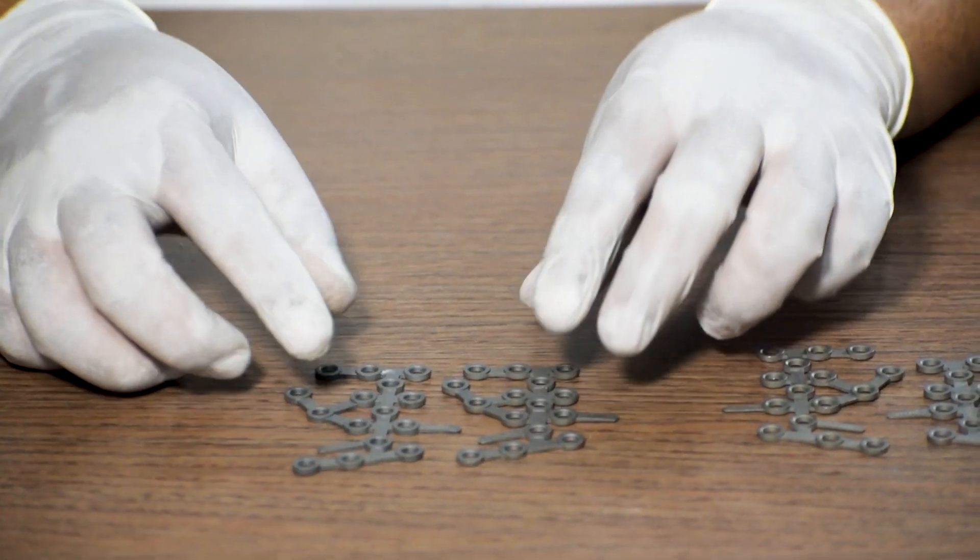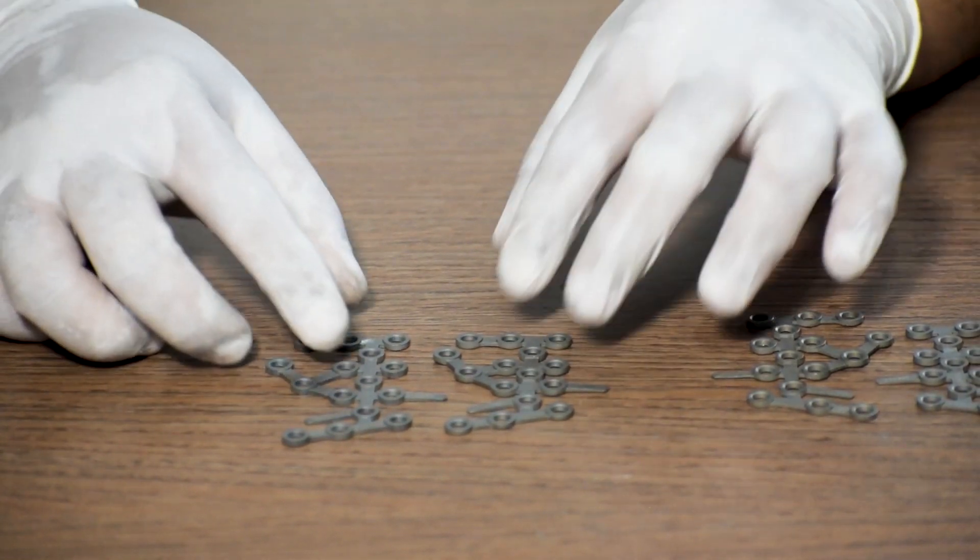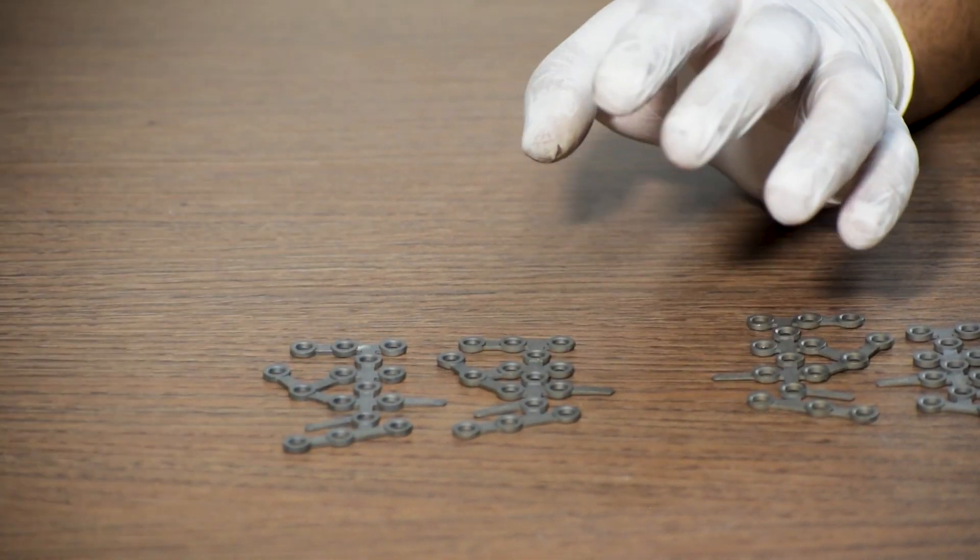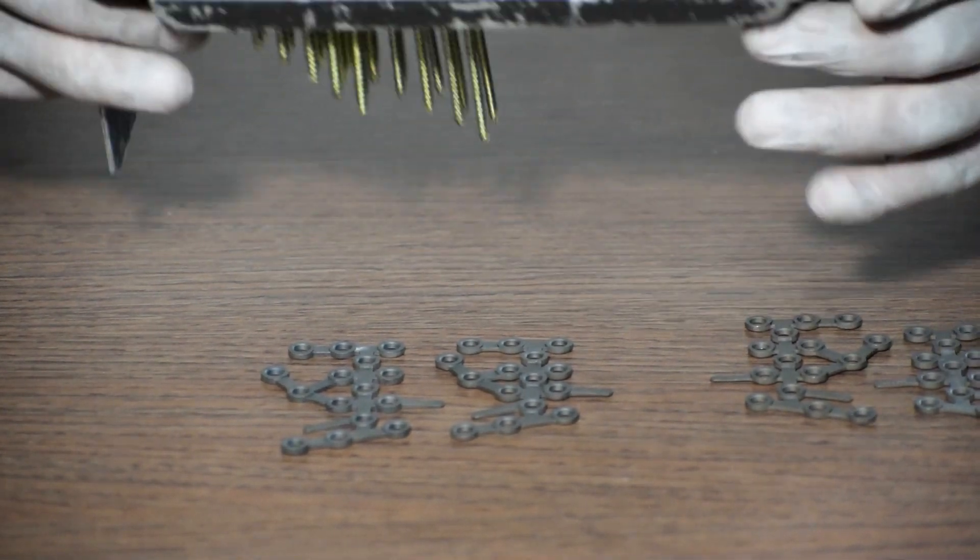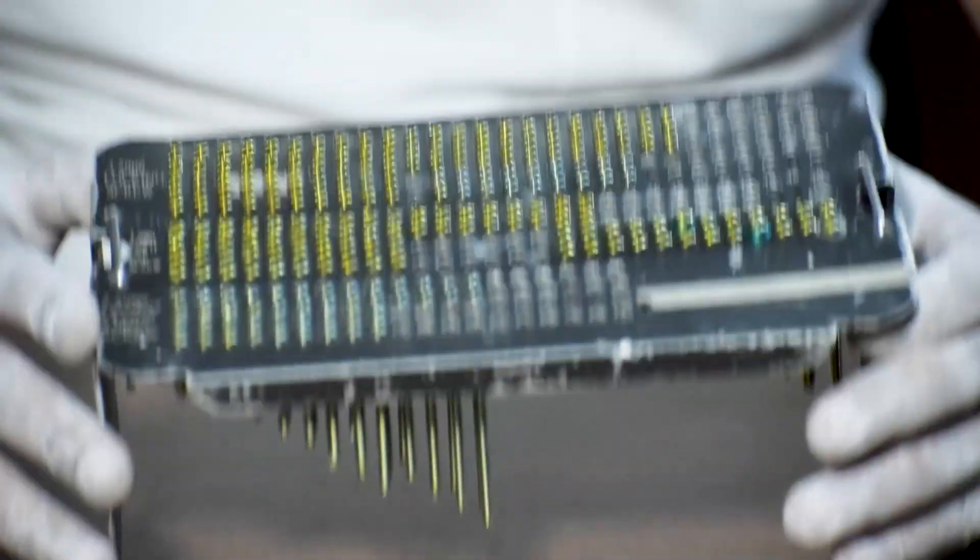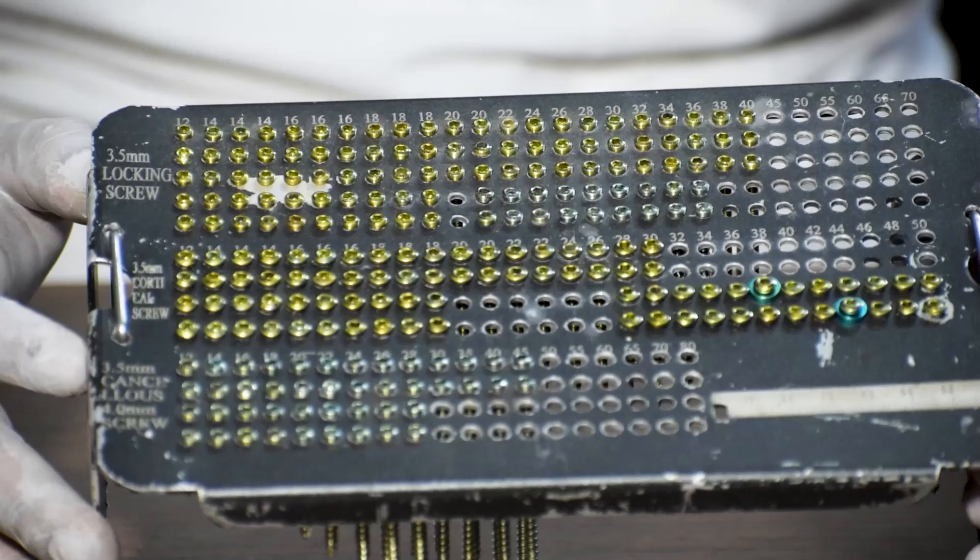Calcaneal plate is a 3.5 system. We can fix this plate with a locking cortical, locking cancellous, non-locking cortical or with non-locking cancellous screws.